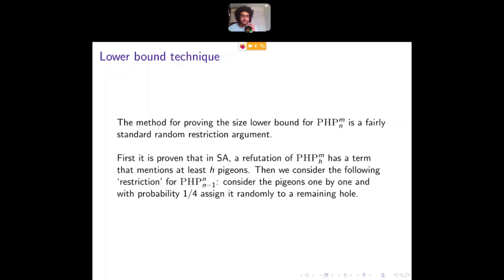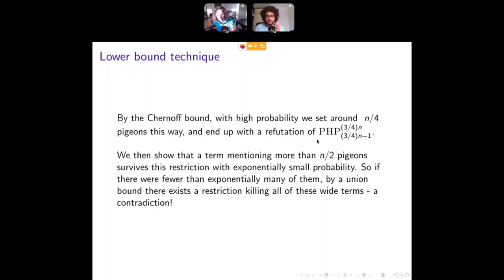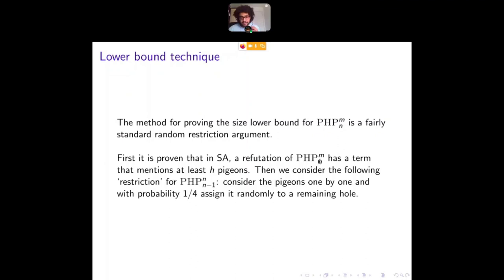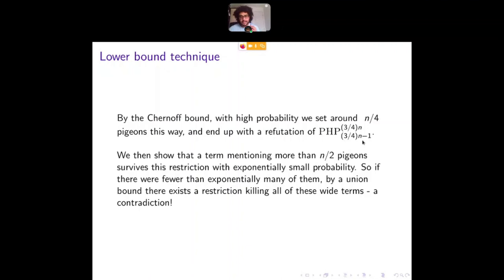So because of the nature of this restriction, with high probability, we're close to the expected number of variables set. We ended up with a refutation of this pigeonhole principle here, but with three quarters N rather than N. But we still have this result that says that this refutation must have a term of size at least three quarters of N. We show that it doesn't because at least unless the original thing was exponentially sized, because these big terms that mention a lot of pigeons, with high probability, they're made irrelevant by the restriction. So unless there's a lot of them, if there's less than exponentially many, and of course I'm waving my hands, then there is a restriction that kills all of these wide terms, but still refutes the pigeonhole principle of size three quarters N, which is a contradiction.